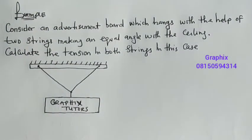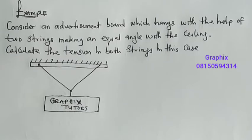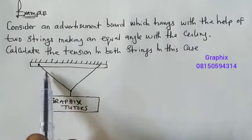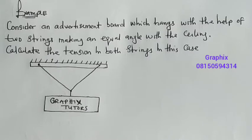Good everyone, my name is Graphics. We'll be looking at this example on Lami's Theorem. It says: consider an advertisement board which hangs with the help of two strings. These are the strings here, and this board — let's say its name is Graphic Suitors — is hanging towards the ceiling. Calculate the tension in both strings.